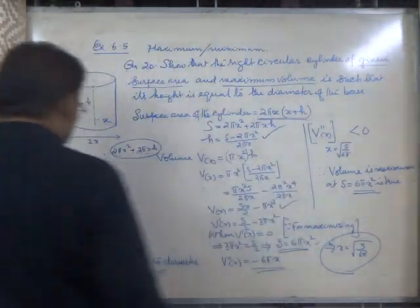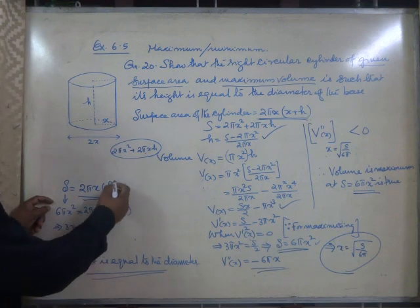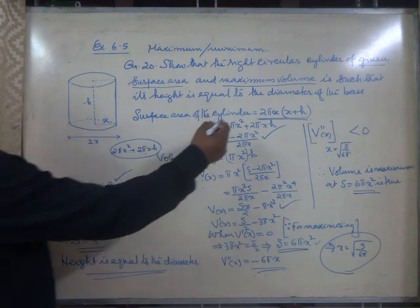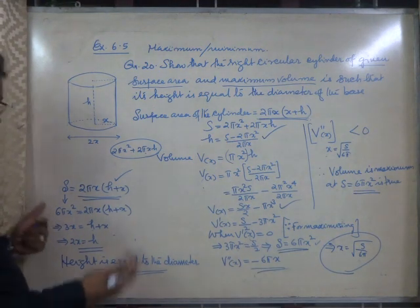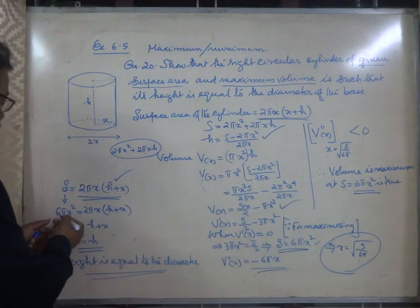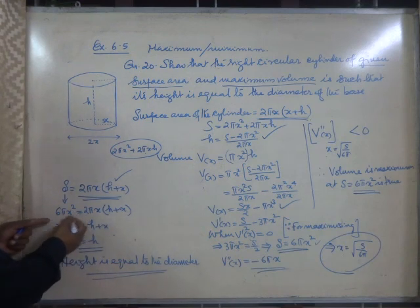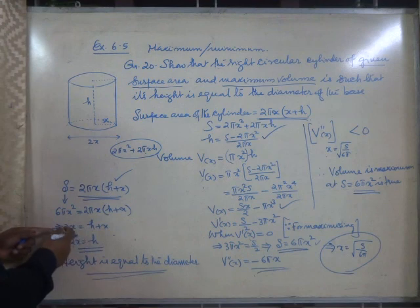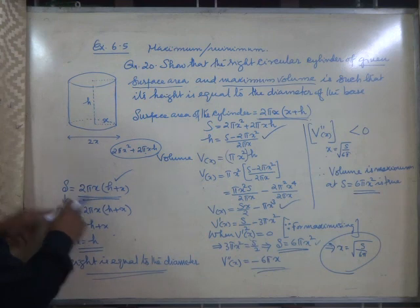Now surface area is 2πx into (x plus h), and it is maximum equal to 6πx². We shall equate. Dividing both sides by 2πx, we get on the left 3x, and on the right we shall divide by 2πx.